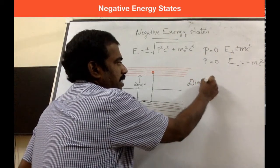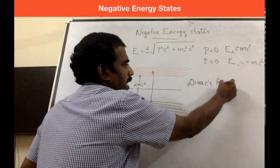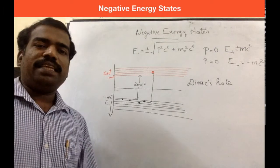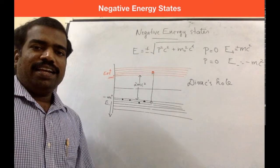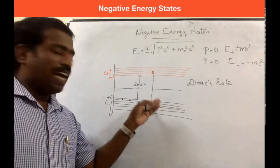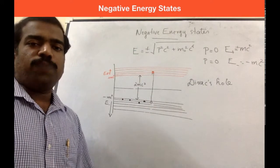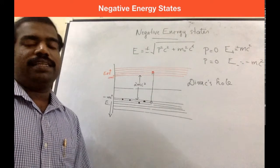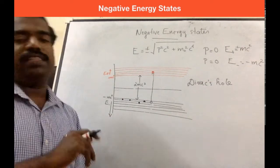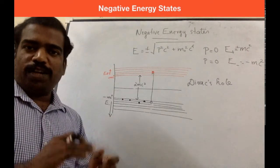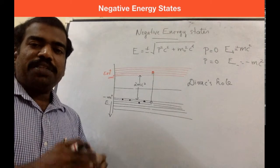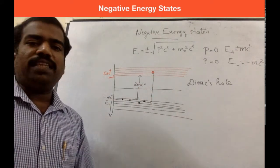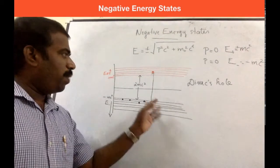The Dirac hole has a charge similar to a positively charged particle, and it has the same mass as the electron and the same magnitude of charge as the electron. If the electron carries negative charge, what is the positive charge of this particle?